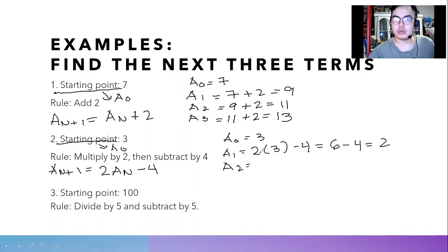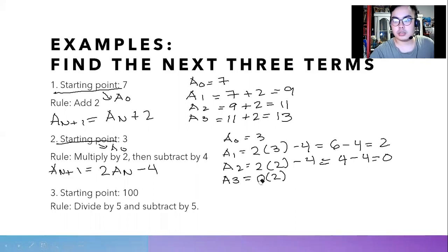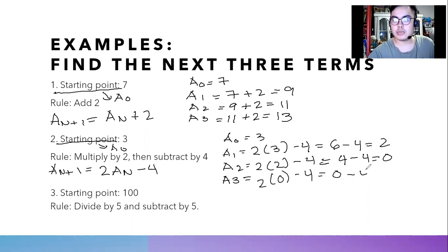Then for a sub two, we use two times two minus four. We multiply two by two because two is the current term for finding a sub two. So two times two is four, then minus four, which equals zero. For a sub three, the current term is zero, and we multiply it by two, giving us two times zero minus four. Two times zero is zero, then minus four, which is negative four.